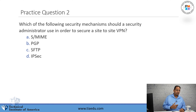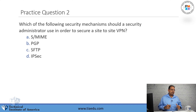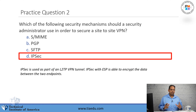Practice question number two: Which of the following security mechanisms should a security administrator use in order to secure a site-to-site VPN? A. S-MIME. B. PGP. C. SFTP. D. IPSec. The answer is IPSec.